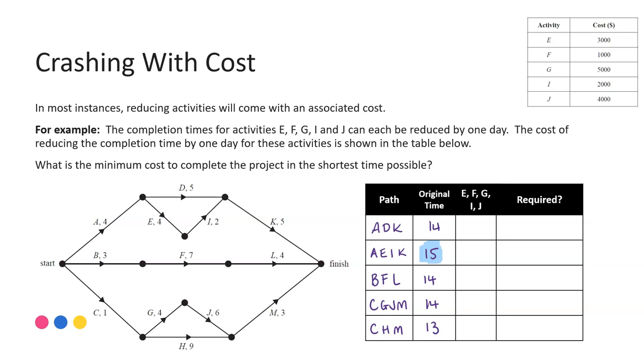Now I can reduce each of these activities, E, F, G, I and J. So anywhere I see any of those I can take one off for each of those activities. They can be reduced by one day. So going through and highlighting any of those reductions, first pathway, none of the activities appear. The second pathway, we have E and we have I. Third pathway, we have F. Fourth pathway, we have G and J. And the fifth pathway, again we have none there.